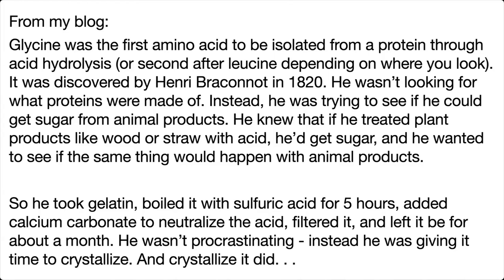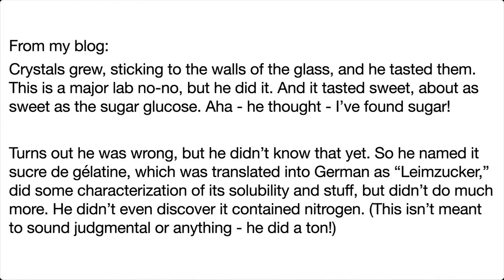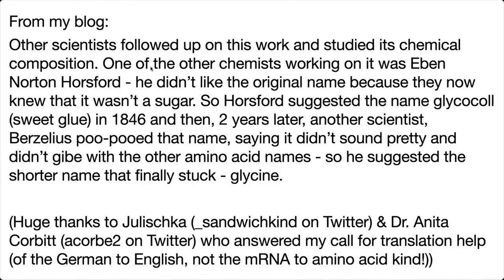He tasted the crystals — which, bad idea, you don't want to taste anything happening in the lab — and he thought they tasted sweet, so he declared he'd found glucose and named it 'sucre de gélatine,' translated into German as 'Leimazucker.' He did some basic characterization like solubility, but didn't even discover it contained nitrogen. Other scientists continued the work: Eben Norton Horsford suggested the name 'glycocoll' for 'sweet glue' in 1846, since it was coming from gelatin. Then two years later, Berzelius felt that name didn't sound right and didn't match the other amino acids, which had those '-ine' endings. He suggested the shorter name that finally stuck: glycine. And that's how we know it now.